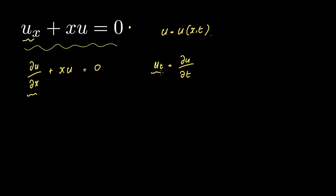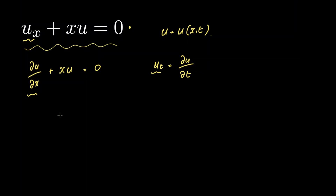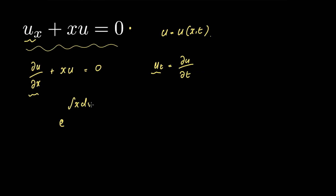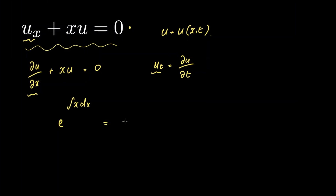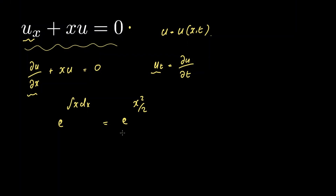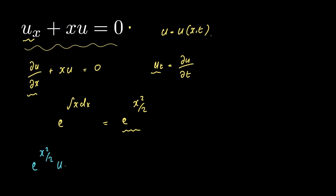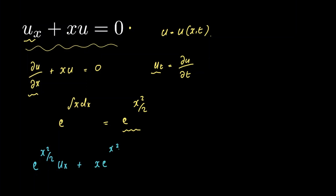Let's solve our problem. We're going to solve our PDE using an integrating factor. We're going to take our integrating factor to be e raised to the integral of x dx. If we integrate this, we get e raised to x squared divided by 2. Now we're going to multiply our PDE by our integrating factor. If we do that, we get e raised to x squared divided by 2 times the partial derivative of u with respect to x, plus x multiplied by e raised to x squared divided by 2 multiplied by u, is equal to 0.